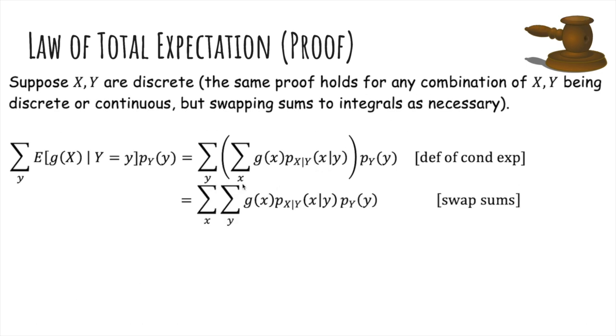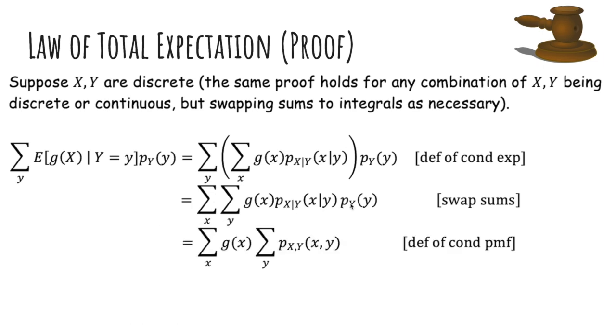And then what we can do is we can swap the order of the summations. Then this X given Y times probability of Y of y is p_{XY}(x,y) by the definition of conditional PMF or the chain rule.